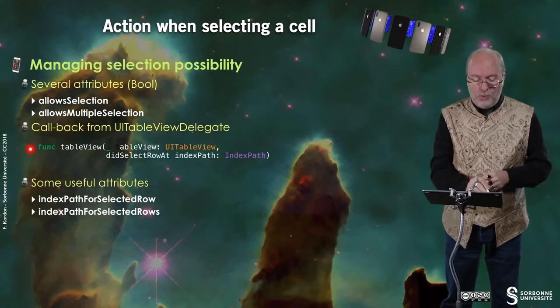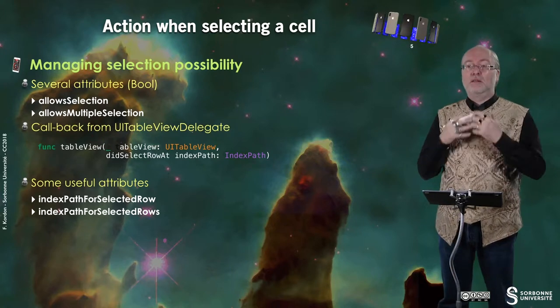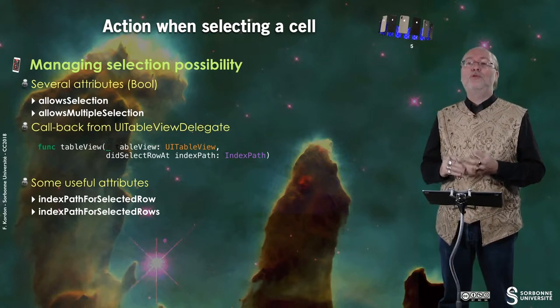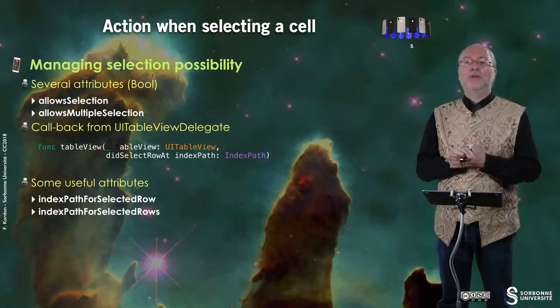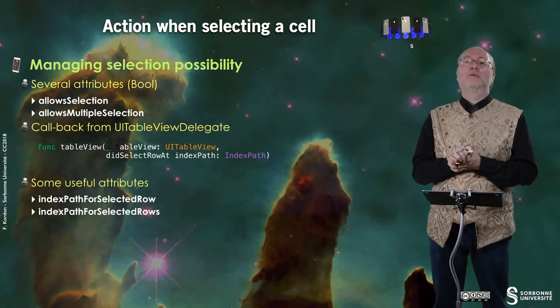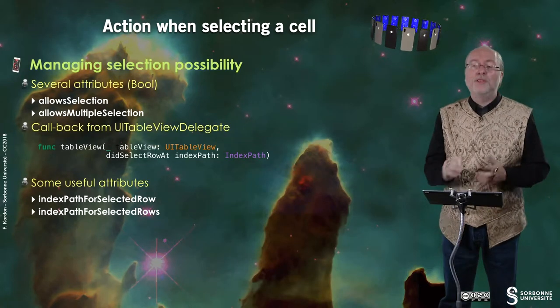When these elements are enabled, you have a potential callback when you tap on a cell. You may implement it or not. Typically, if you allow multiple selection and have some action button associated to it, it means that you probably do not need to implement this method.